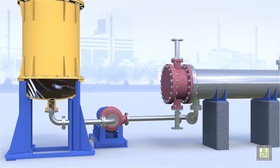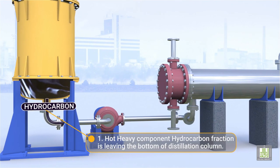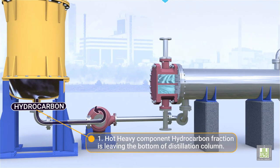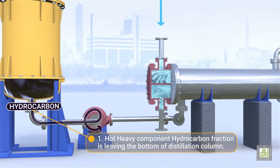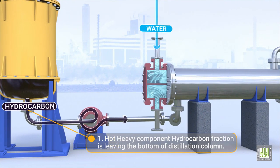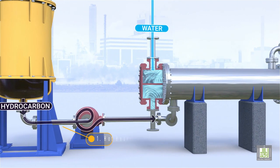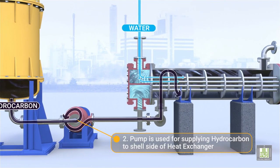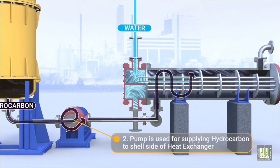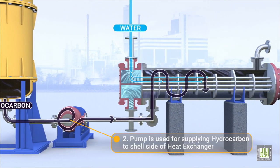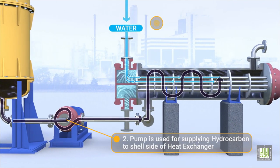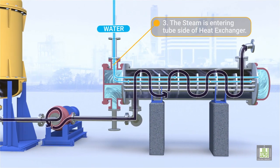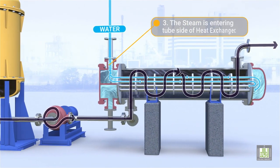Flow pattern: 1. Hot heavy component hydrocarbon fractions leaving the bottom of the distillation column. 2. A pump is used for supplying hydrocarbon to the shell side of the heat exchanger. 3. Steam is entering the tube side of the heat exchanger.